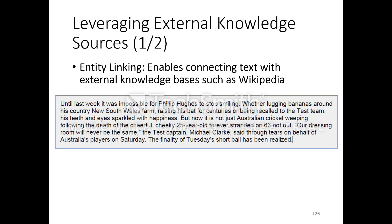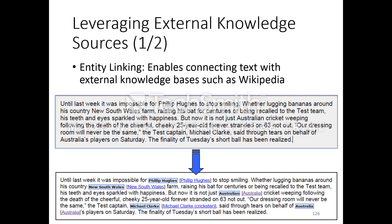Philip Hughes refers to a person — a well-known cricketer, as you will figure out by reading the next sentences. The task of entity linking is about identifying named entities in text that have an external reference in a knowledge base. So Philip Hughes is disambiguated to Philip Hughes the Australian cricketer, and Michael Clark is disambiguated to Michael Clark the cricketer, not any of the many other Michael Clarks.